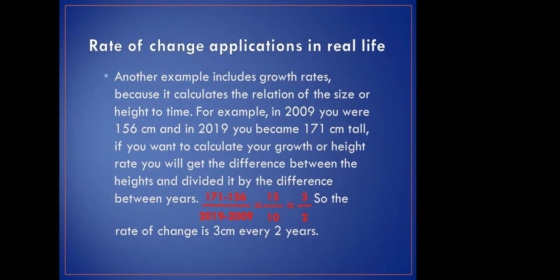171 minus 156 divided by the difference of the years, 2019 minus 2009, which will be 15 over 10. So the rate of change is 3 centimeters every two years. It will be the average rate of change, the ratio between the centimeters over years.